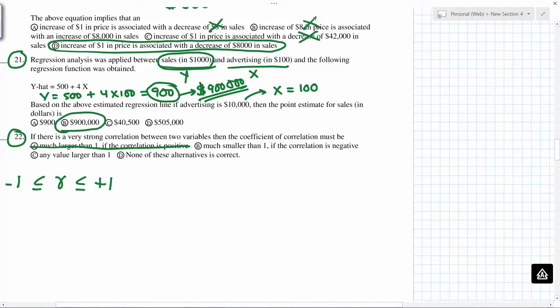Much smaller than 1. So if it is very strong, you cannot have much smaller. Any value larger than 1, so that is ruled out. So this looks like the correct answer.